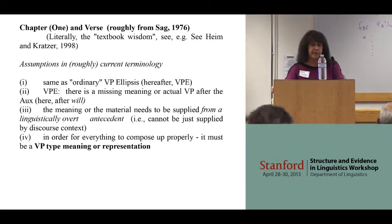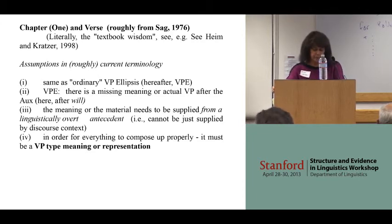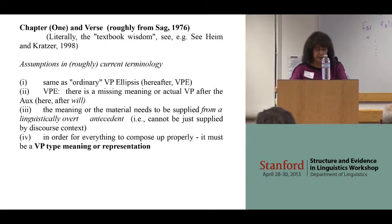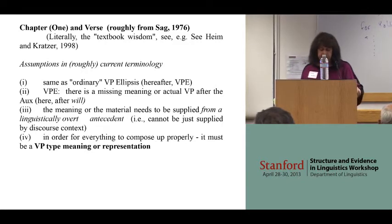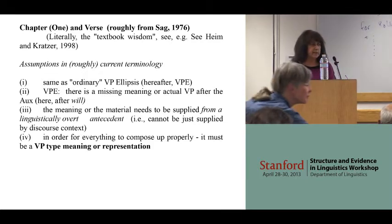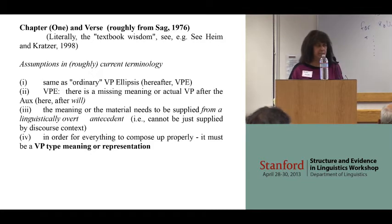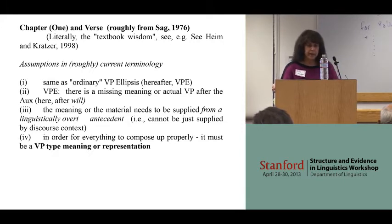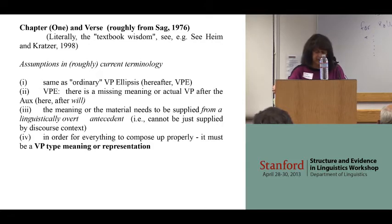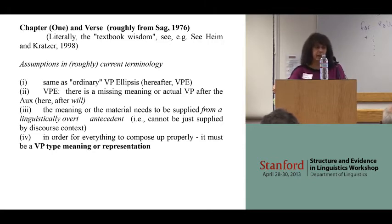There are two key pieces to his analysis, two key assumptions — the ones I give in Roman numerals three and four, so you can skip right to those. One is that VP ellipsis in general, including this type, requires an overt linguistic antecedent to supply either a representation or a meaning. You have to have something overtly said to supply, or be identical to, the meaning and/or representation.